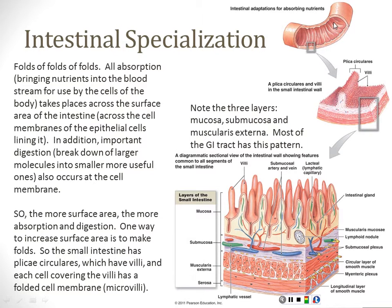These broad permanent folds that you can see with the naked eye are called plica circularis — essentially a pillar fold, the first level of folding. Lining those permanent folds we have the villi: the little tufts of carpet that further expand the surface area because we have all of these little tops and bottoms. And as we zoom in and look at the villi themselves, each cell lining the villi has folds at its top too, similar to what we saw in the respiratory tract.